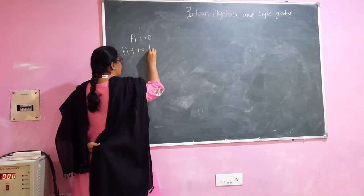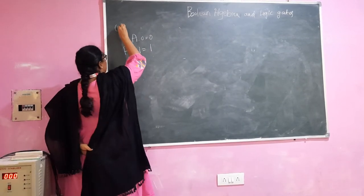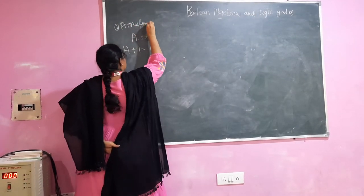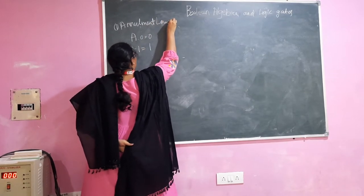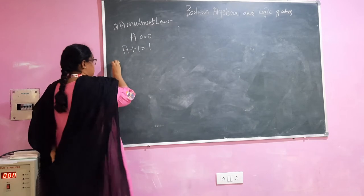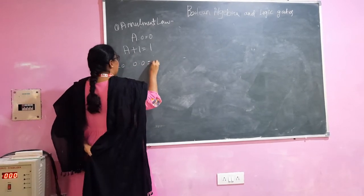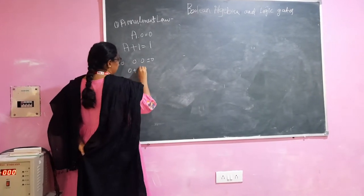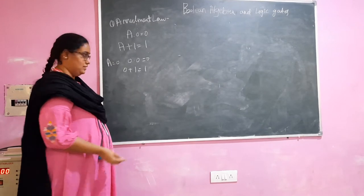This is the annihilation law. For example, if we take A to be 0, then we get 0 dot 0 is 0, and for the other one, 0 plus 1 will be 1. This is what the annihilation law states.